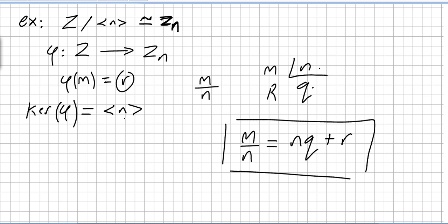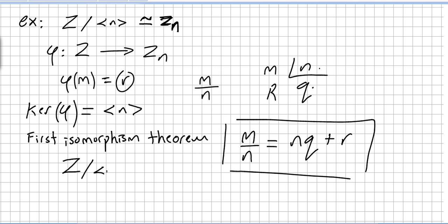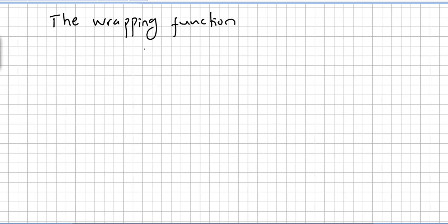This mapping is a homomorphism, and the kernel of this homomorphism is ⟨n⟩, the subgroup generated by n. Now, by the first isomorphism theorem, we conclude that the factor group of the integers by the subgroup generated by n is isomorphic to Zₙ.